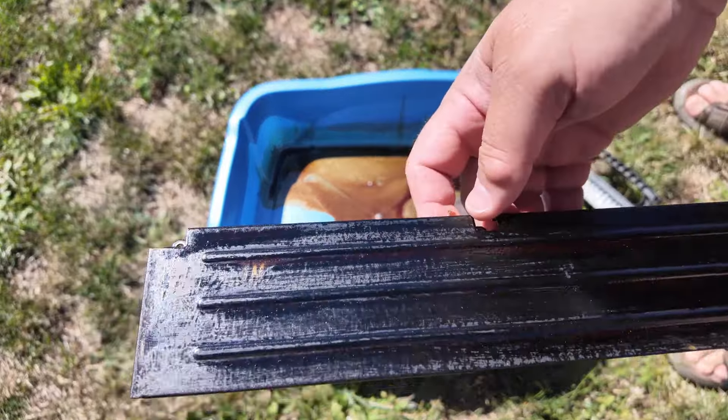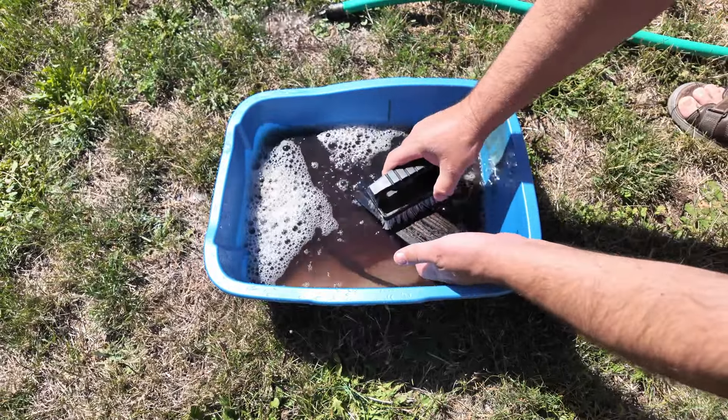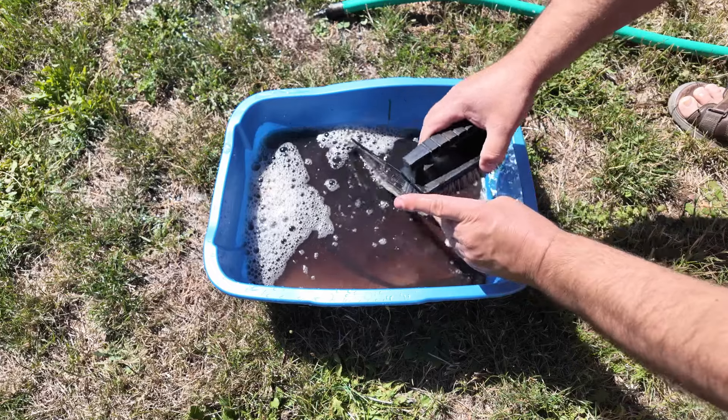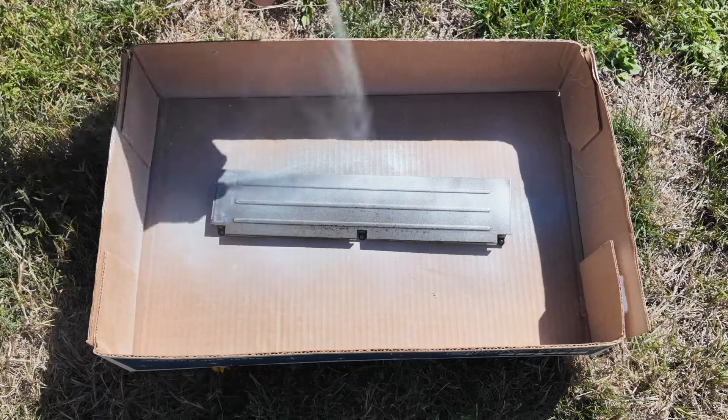Then I treat the piece overnight with a rust converter. In this case I'm using Fertan because I'm going to paint it and Fertan converts the rust into a paint ready material. Finally, after cleaning off all the residual Fertan, it gets a good coat of high zinc paint and looks great.